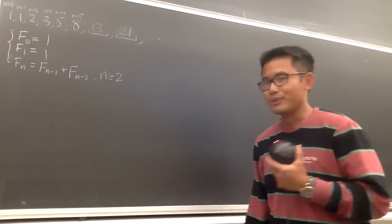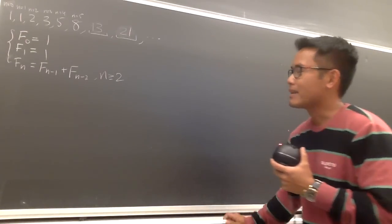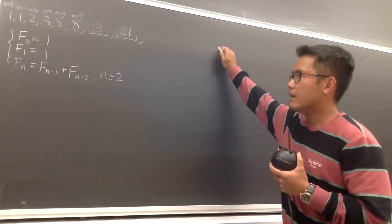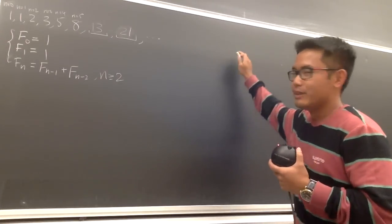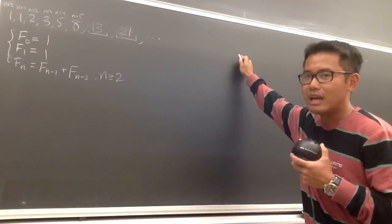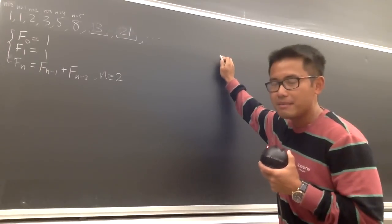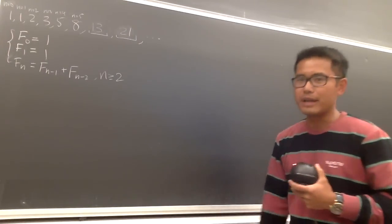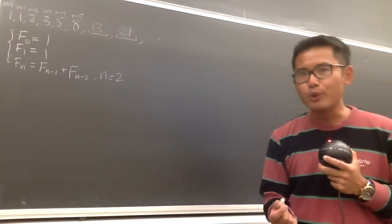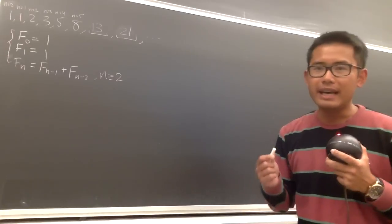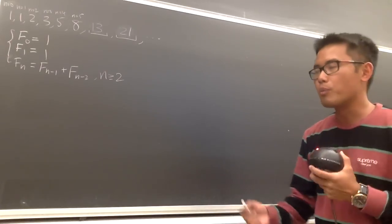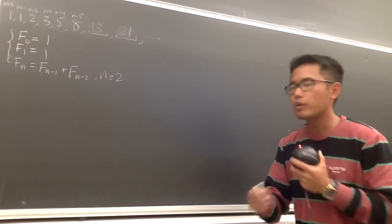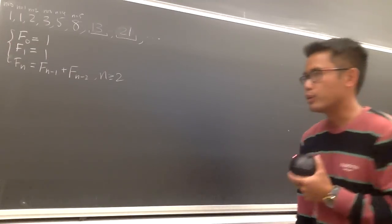That's pretty easy to do, right? But the trouble with a recursive formula is: what if I want to figure out F(100)? In order to figure out F(100), we'd have to figure out F(99) and F(98) first. That's not fun. So I will show you guys how to find the nth term formula — just an explicit formula based on n only — and this is how we are going to do it.